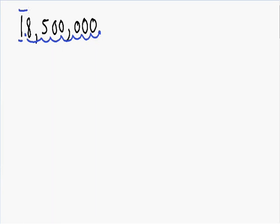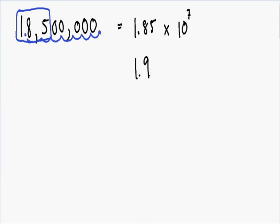Let's take a look at all of our non-zero digits. Notice how inside our box we now have the number 1.85. So we have 1.85 and we moved the decimal point 7 times, so we need to put a 7 exponent on top of the 10. Notice how I put a positive 7 because we started with a really large number — a large number has a positive exponent. And if you wanted to round to one decimal place, you could round up and say 1.9 times 10 to the 7th.